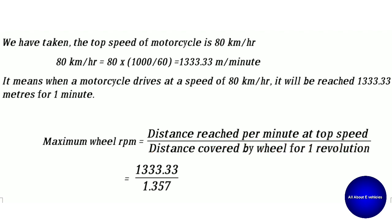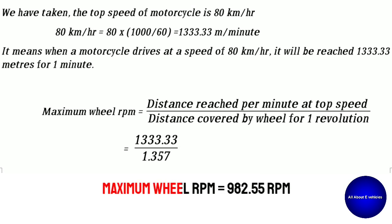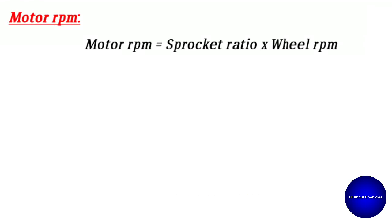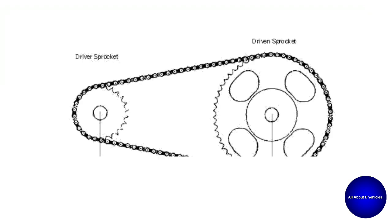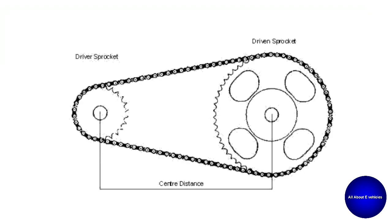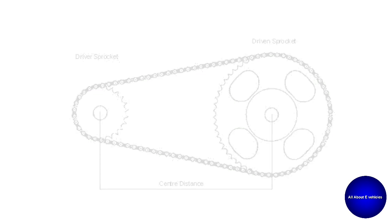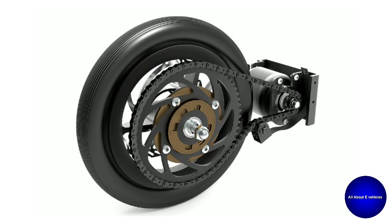Substituting these values, we get the maximum wheel RPM as 982.55 RPM. Now let us find the motor RPM. The motor RPM can be found using the formula: sprocket ratio multiplied by wheel RPM. This picture clearly shows the driver sprocket (motor sprocket) and driven sprocket (wheel sprocket), and also shows a real-time view of the motor and wheel connected via a chain drive.